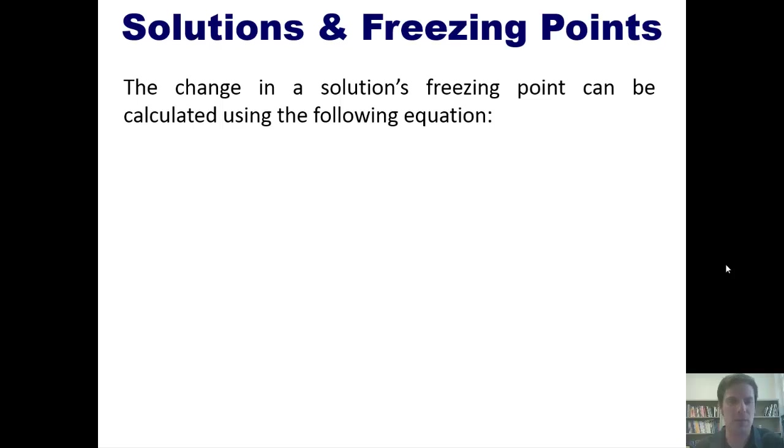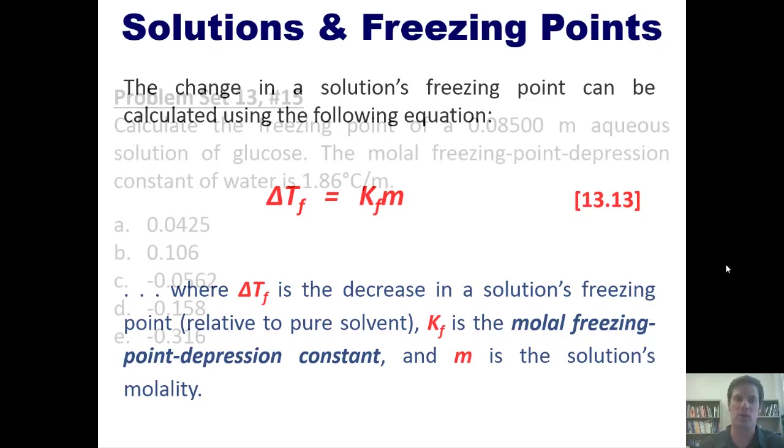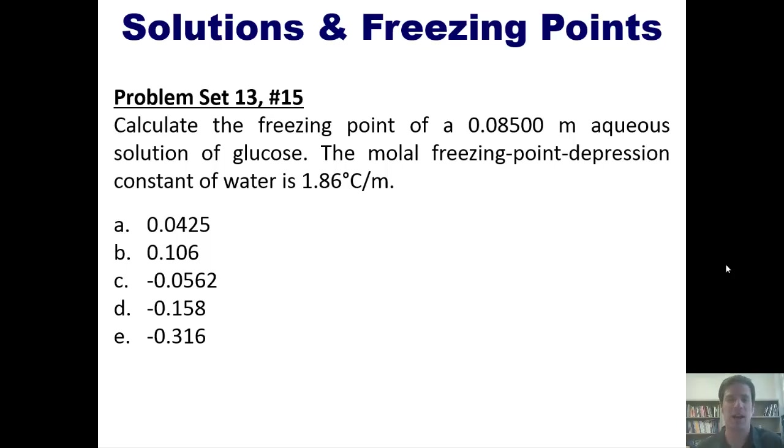So the change in a solution's freezing point can be calculated by using the following equation, where delta T sub f is the decrease in the solution's freezing point relative to that of the pure solvent, k sub f is the molal freezing point depression constant, and m is the solution's molality. That brings us to a wonderful problem. Calculate the freezing point of 0.08500 molal aqueous solution of glucose. The molal freezing point depression constant of water is 1.86 degrees Celsius per molal. As per usual, I'm not going to answer this question in this video, but I'll post a link to a separate video in which I do answer the question, which you're welcome to watch if you so choose.